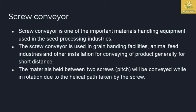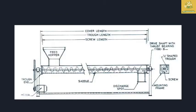The material moves by two screws in the rotation of the screw conveyor. If you look at the shaft and the flight on the shaft, the material is moved. There is a feeder hopper. The lengths are: casing length, trough length, and screw length. Cover length is end-to-end; screw length is input-to-output.